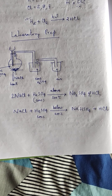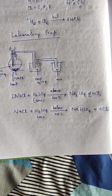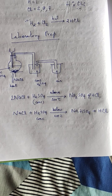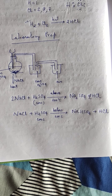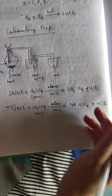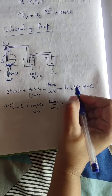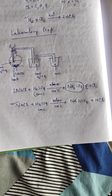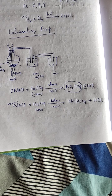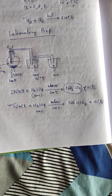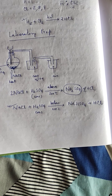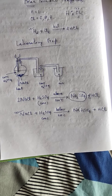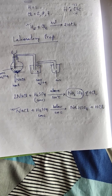Sulfuric acid is a dibasic acid and can produce two types of salts: Na₂SO₄ and NaHSO₄. The below 200°C reaction is more preferable for lab preparation. Above 200°C, Na₂SO₄ is produced, which is a very sticky substance that sticks to the glass apparatus and is very difficult to remove. Moreover, using excess heat wastes fuel and may crack the glass apparatus. So in general we avoid temperatures above 200°C and prefer below 200°C.